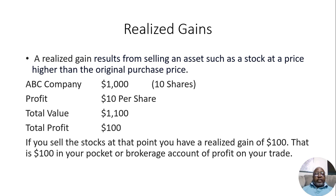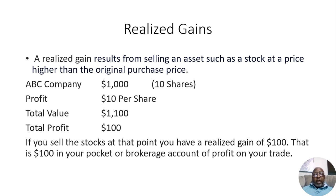Now, if you sell the stock at that point, you have what's called a realized gain of $100. That's $100 in your pocket or brokerage account of profit on your trade. In other words, it's a realized gain because you actually sold the stocks and you made the money — a $100 profit.